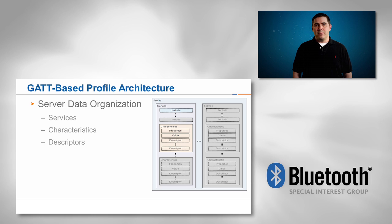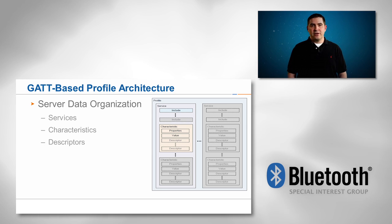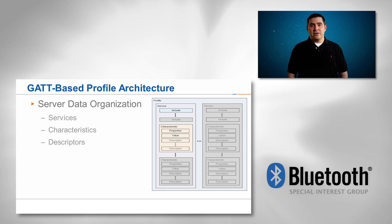A GATT-based application profile is comprised of one or more services where each service contains one or more characteristics. The profile specification describes the behaviors associated with the application client and any profile specific service behaviors. The service specification describes the behaviors of the service. Services can be used by multiple profiles, so reuse of existing defined services is encouraged.